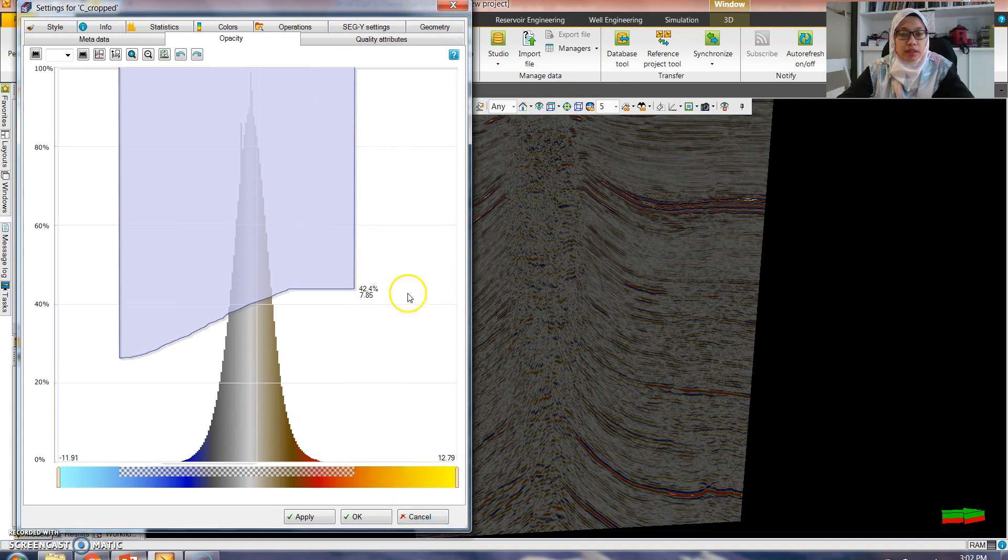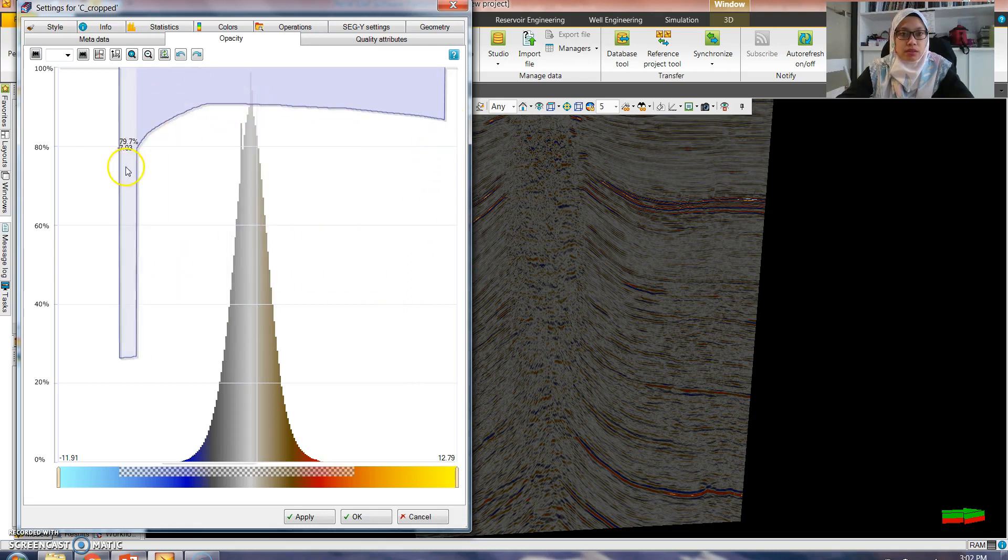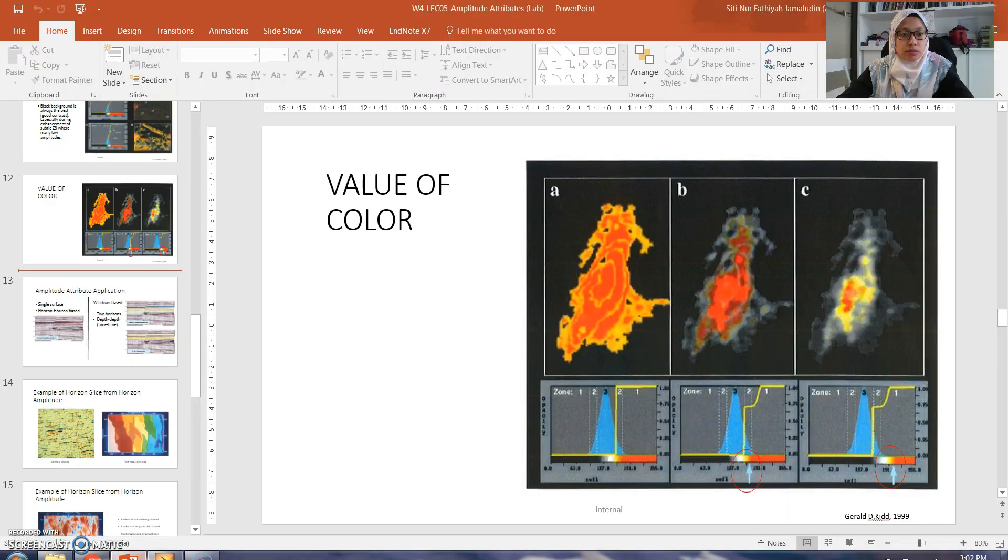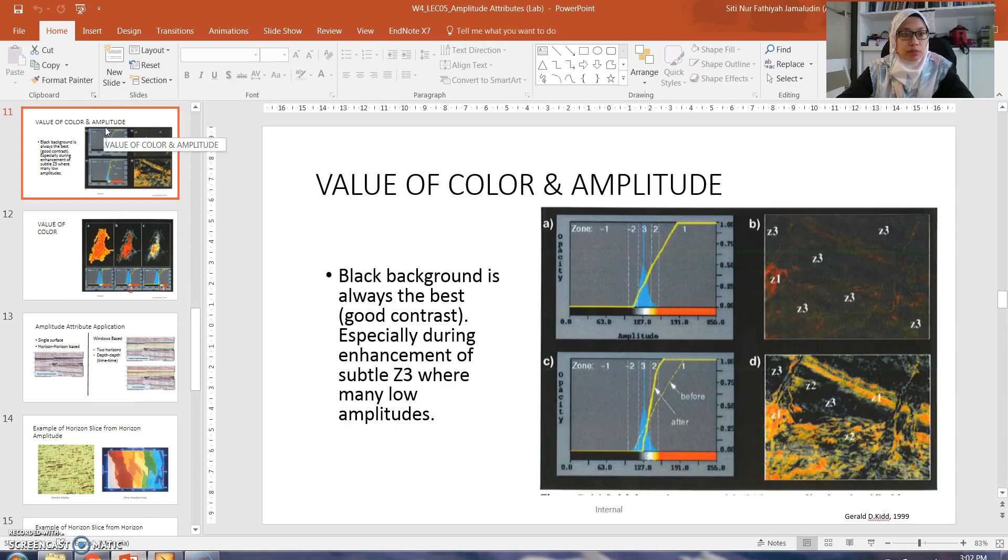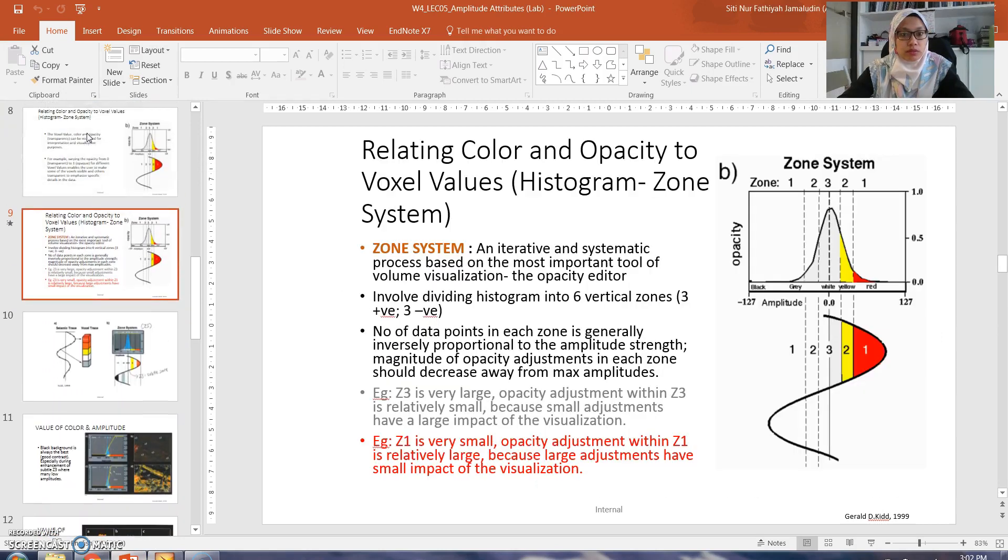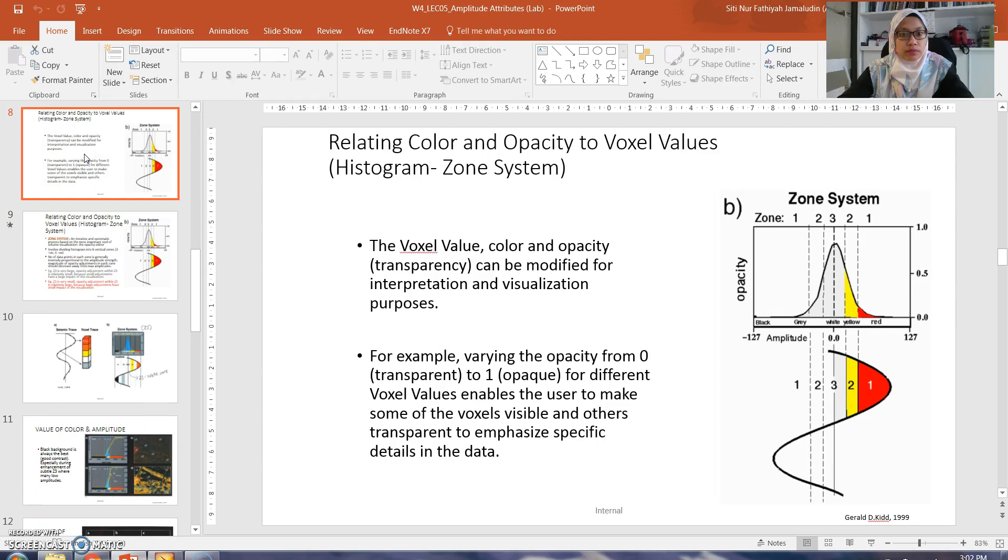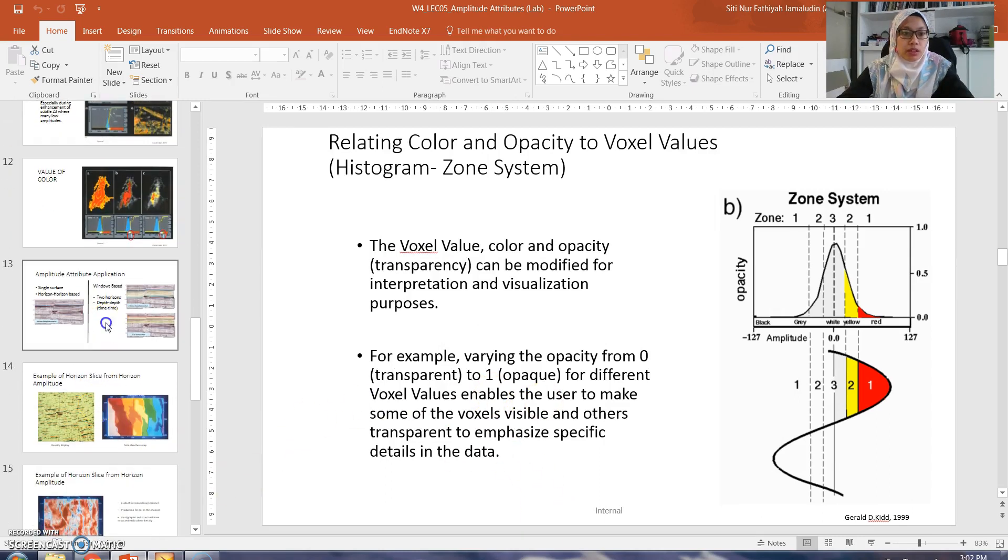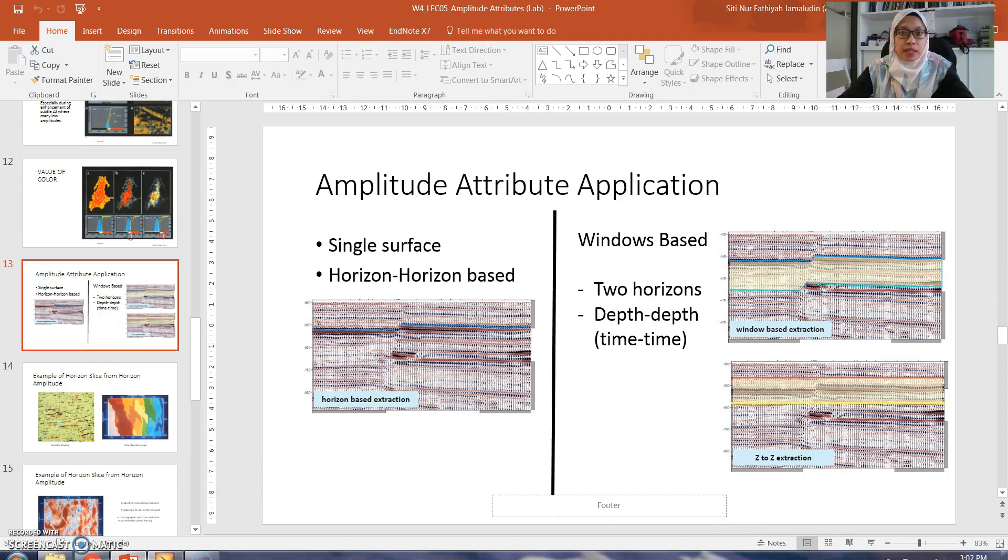We can change the opacity from value from 0 means transparent to 1 means applied. So now let's have a look on how we can apply amplitude attributes.